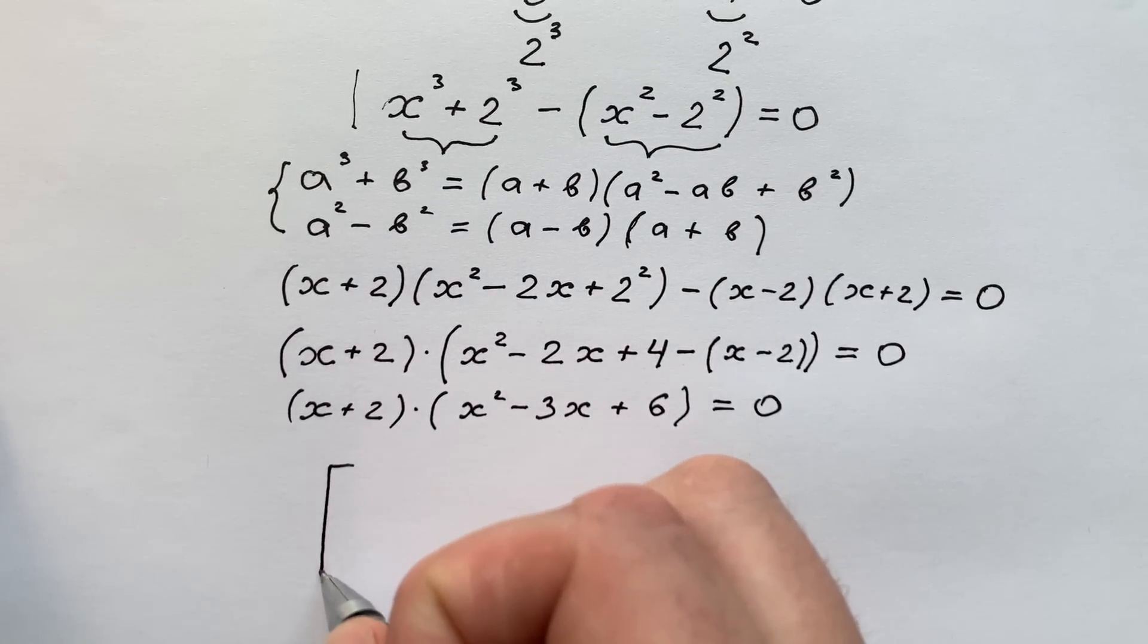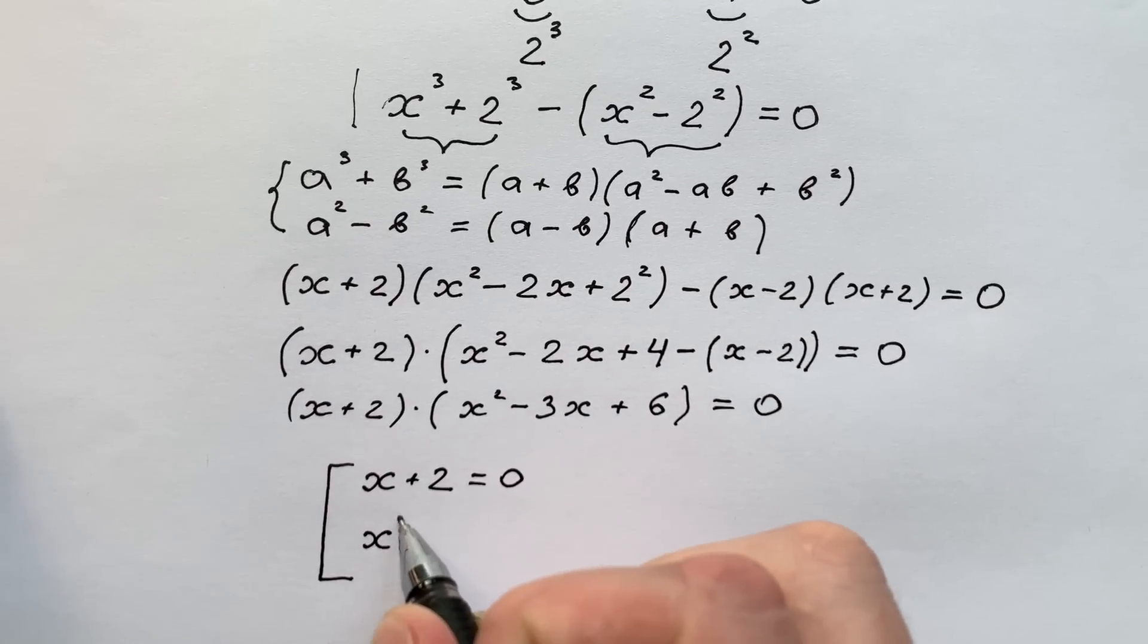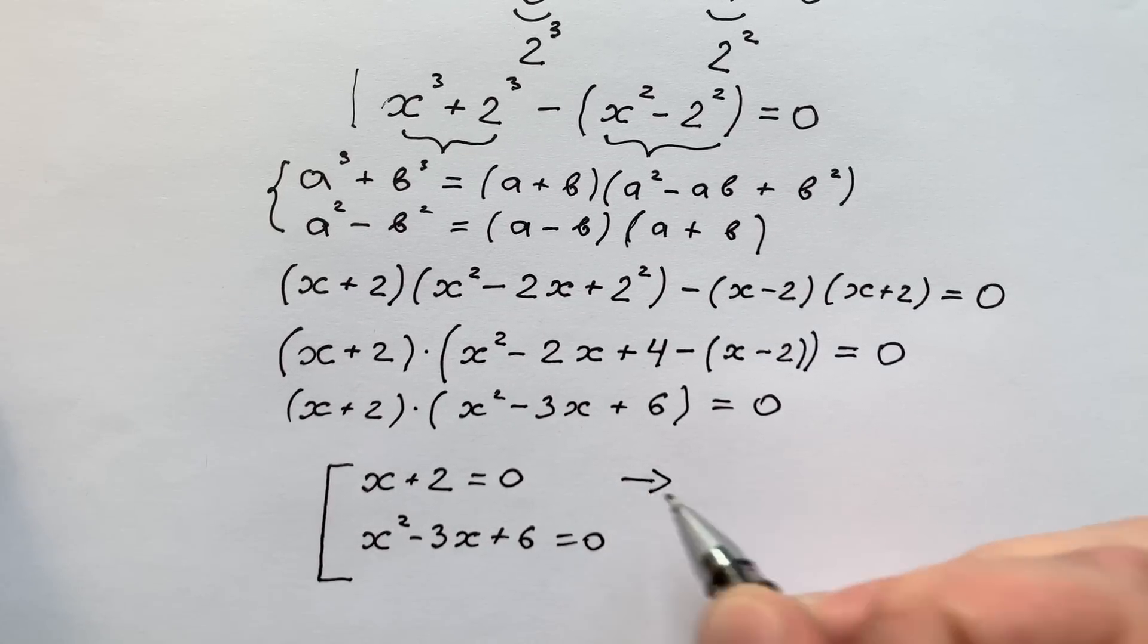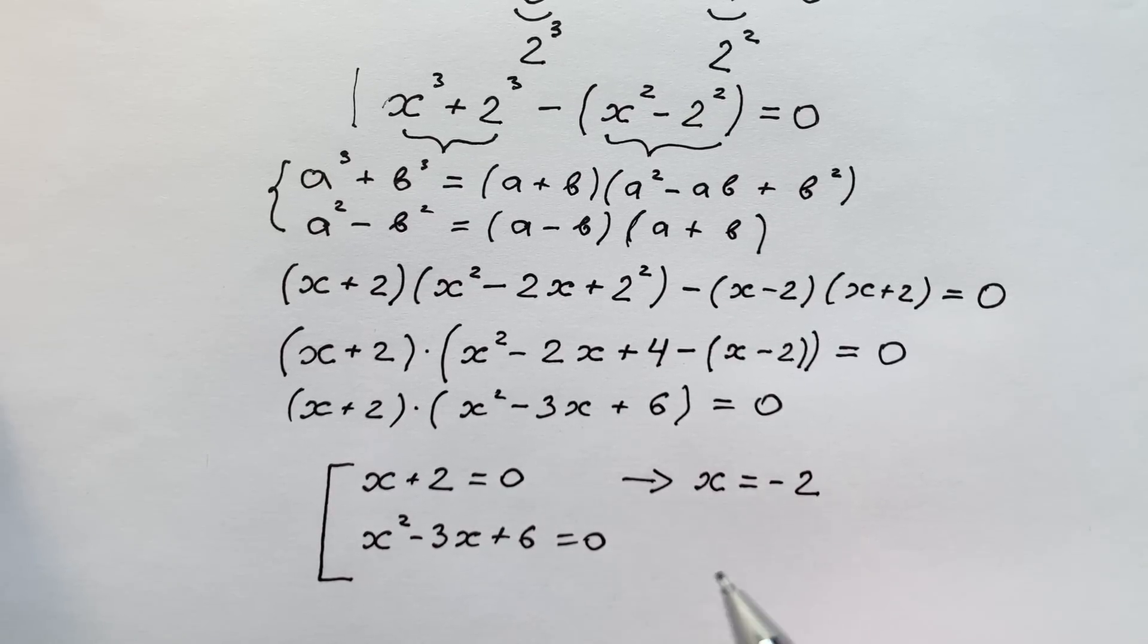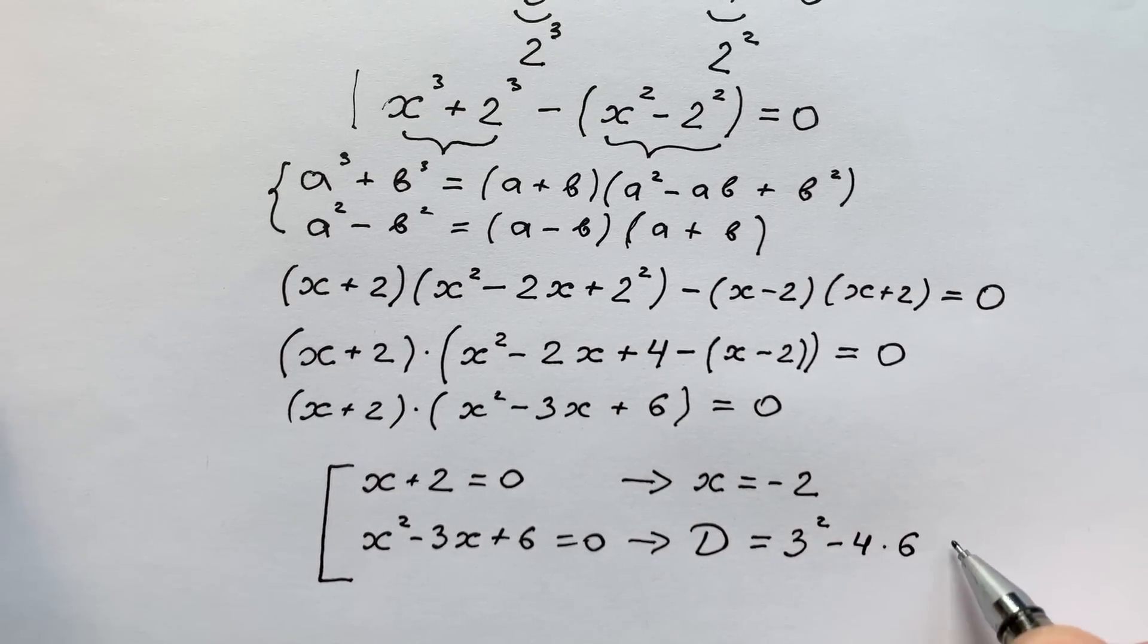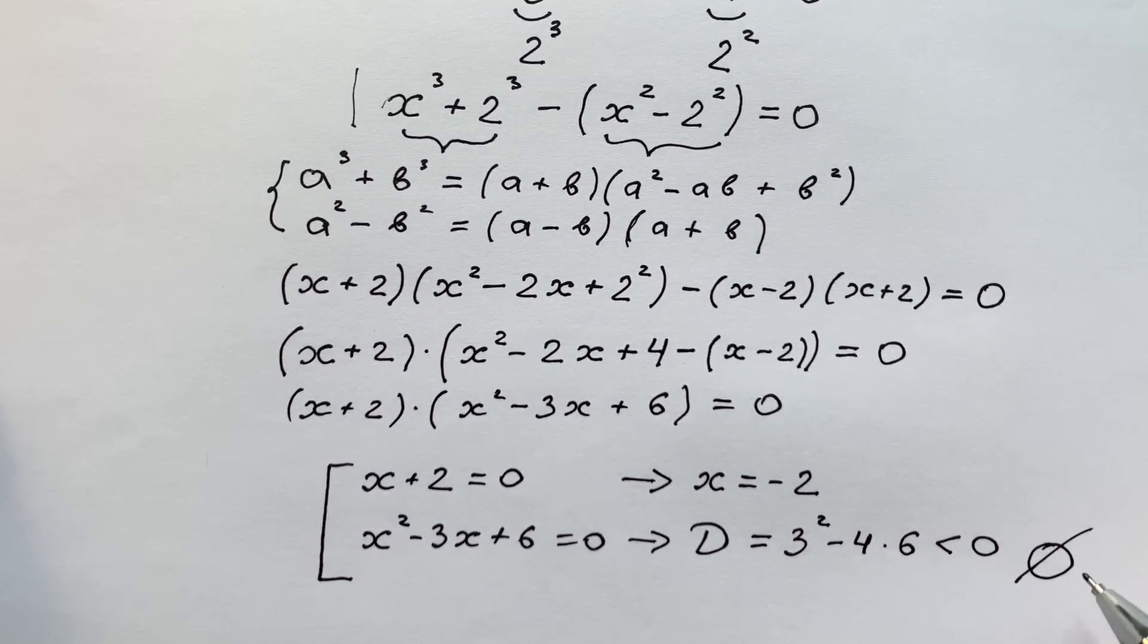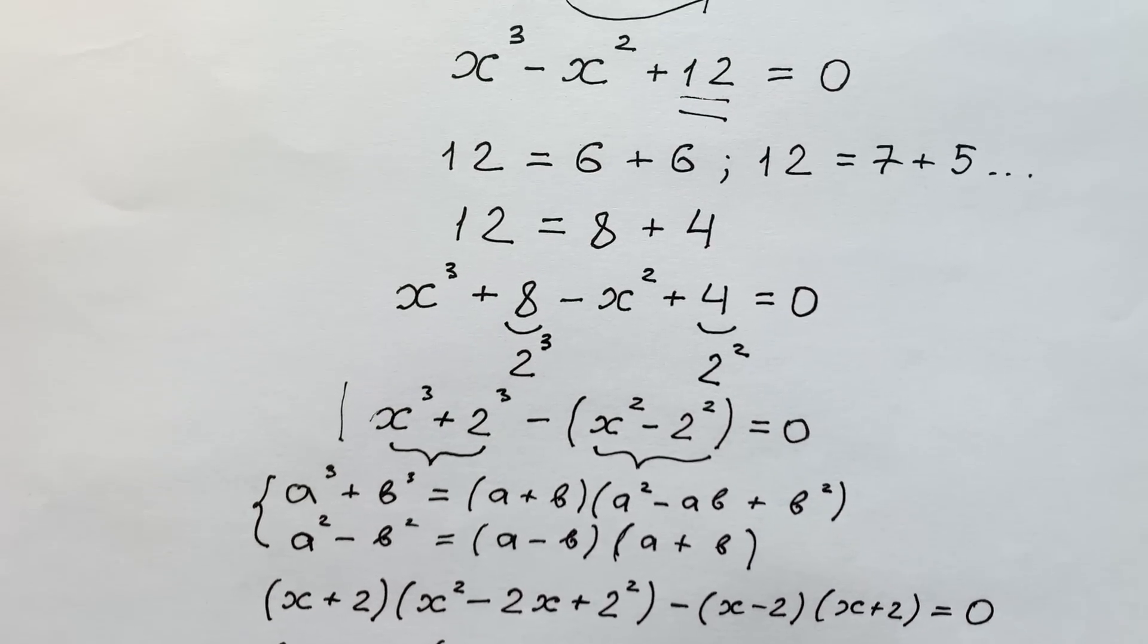First case when x plus 2 equals to zero, and second case x squared minus 3x plus 6 equals to zero. In the first case we get x equals to minus 2. But solving the second case we understand that in this quadratic equation, discriminant that is equal to 3 squared minus 4 times 6 is less than zero. That's why we don't have any real solutions. So the only one solution in this equation is x equals to minus 2. This is the solution of our equation.